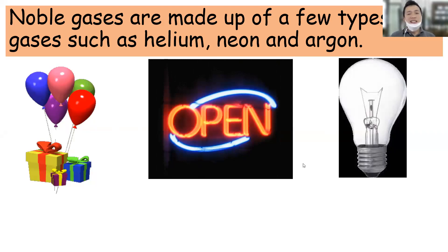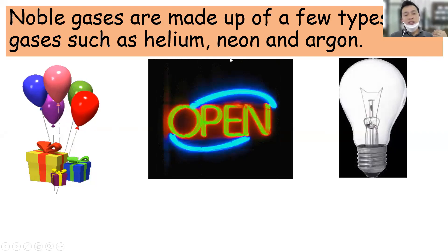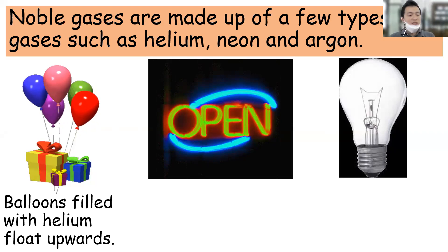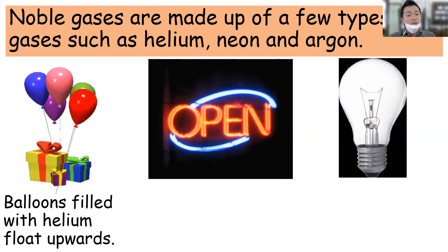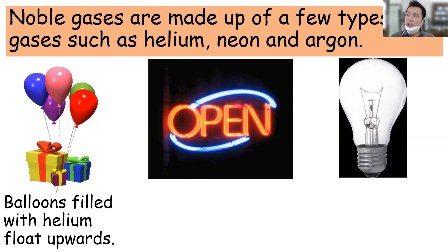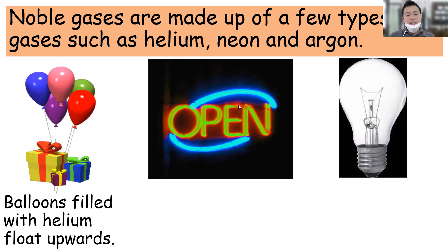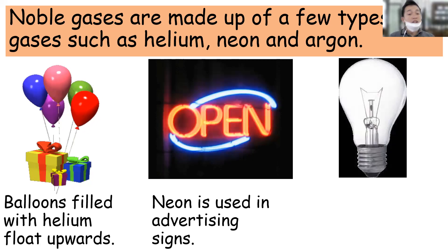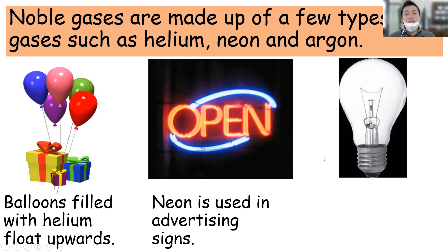Another kind of gas we have is the noble gases. This is made up of a few types of gases such as helium, neon, and argon. Helium is used for balloons — this kind of gas is very light and it makes the balloon float in the air. Because of helium you can appreciate the balloon flying. Another one is neon, which is usually used for advertising signs. And last but not least, argon can be seen in the light bulb.